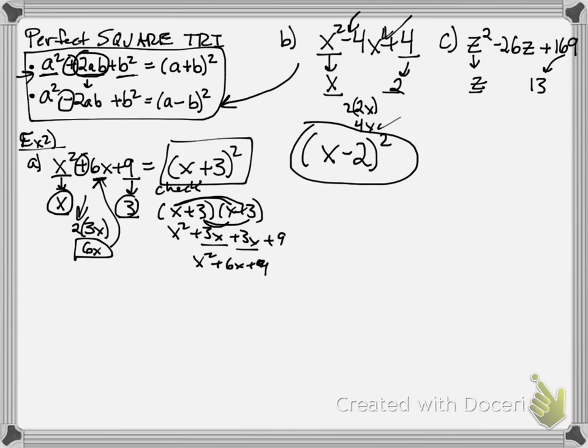And if you multiply these together, 13z, right, and you double it, there's your 26z, which is what I have in the middle. So be careful though, because it's negative, I'm going to factor into z minus 13 quantity squared instead of z plus 13 quantity squared.